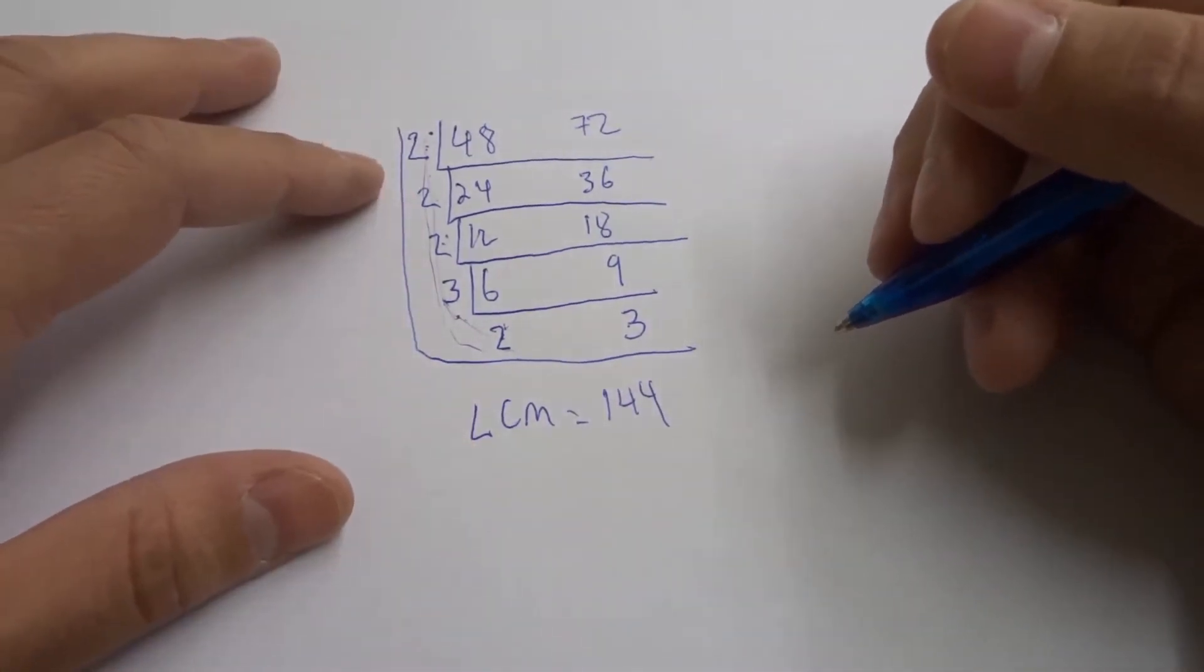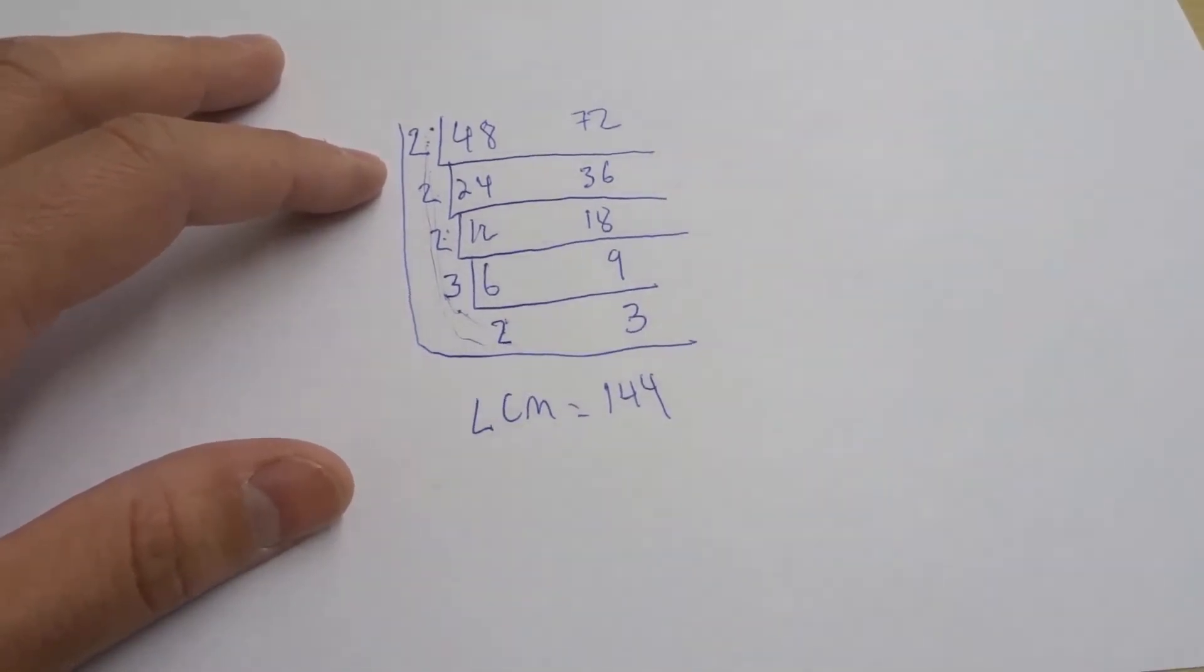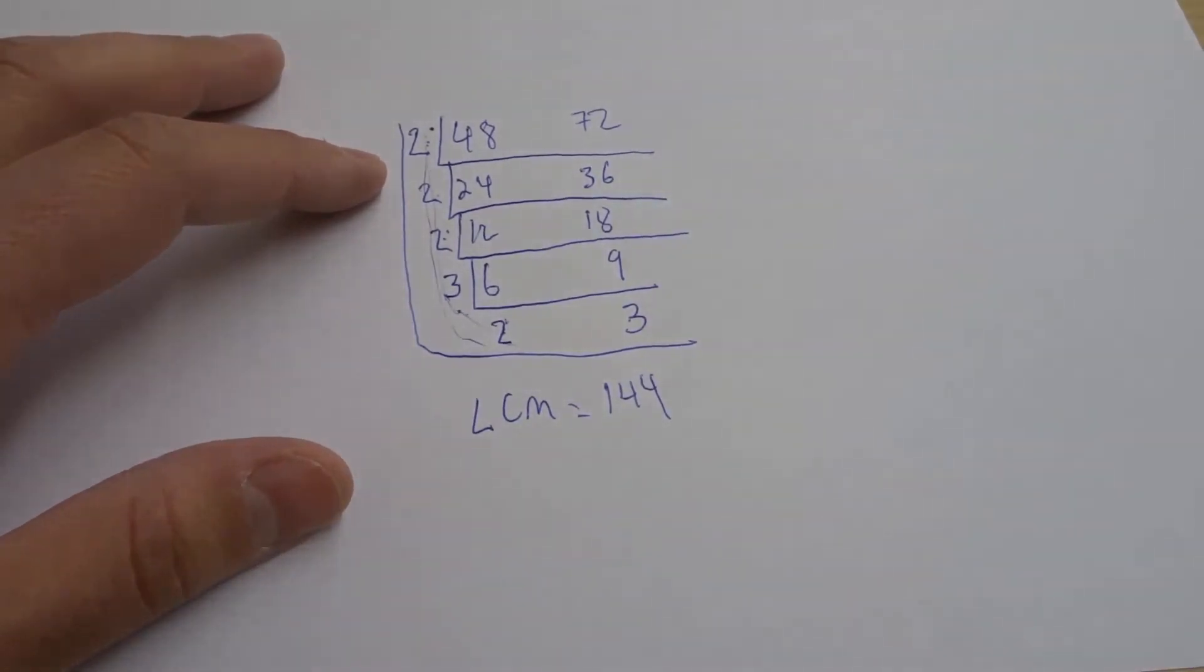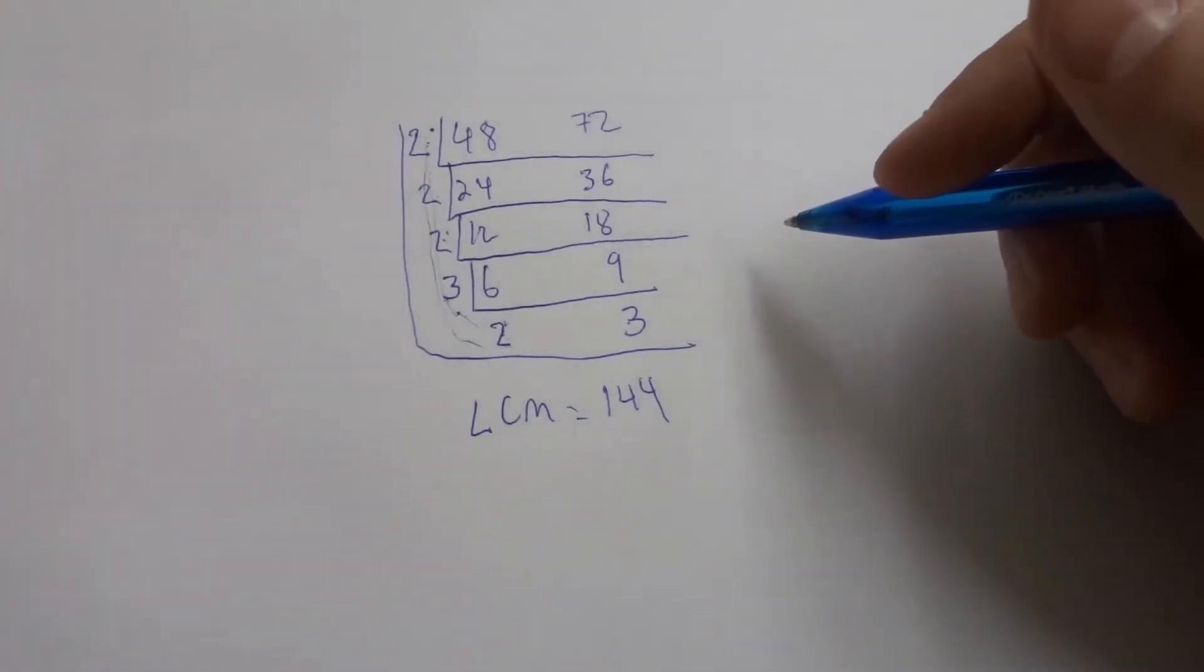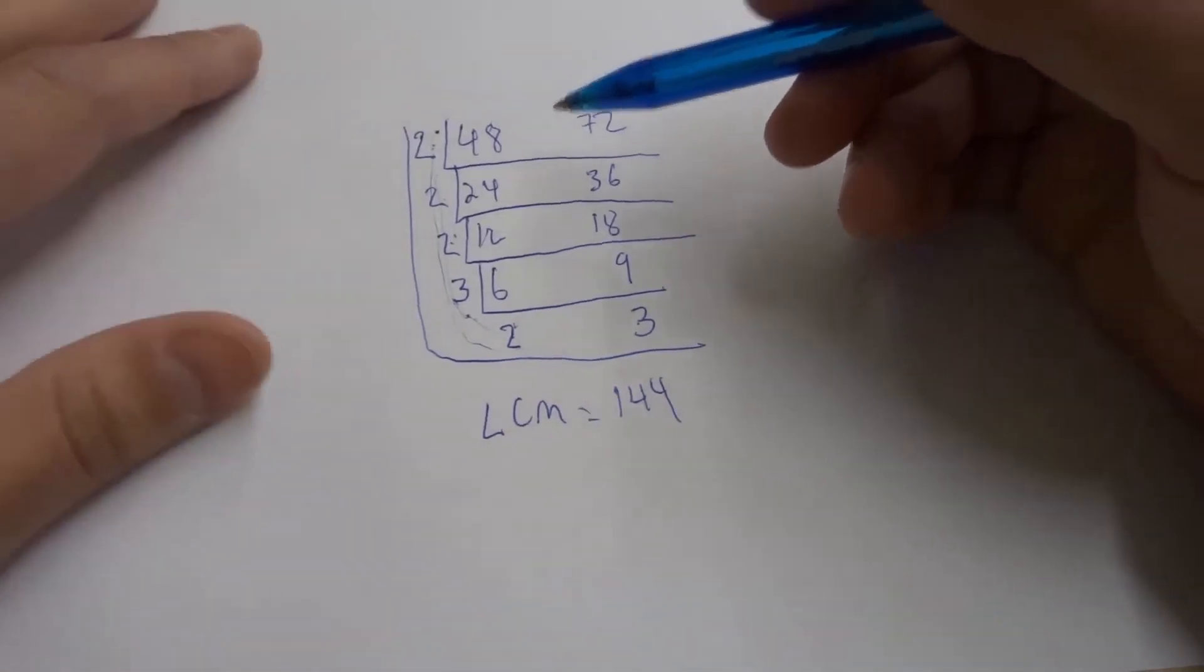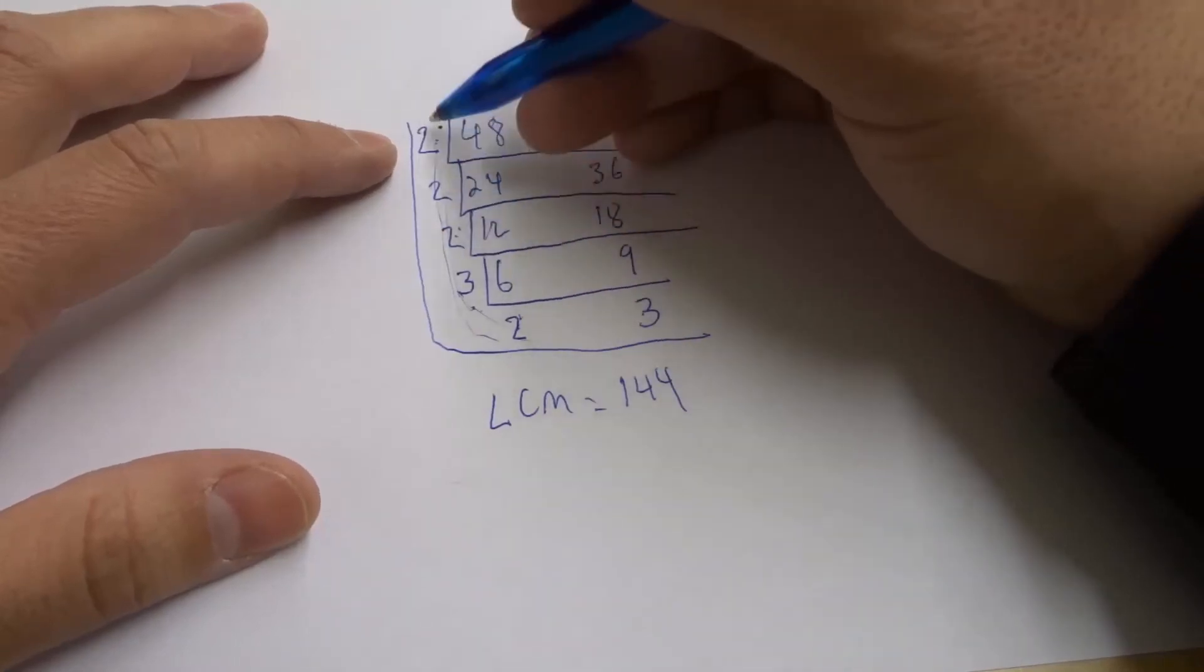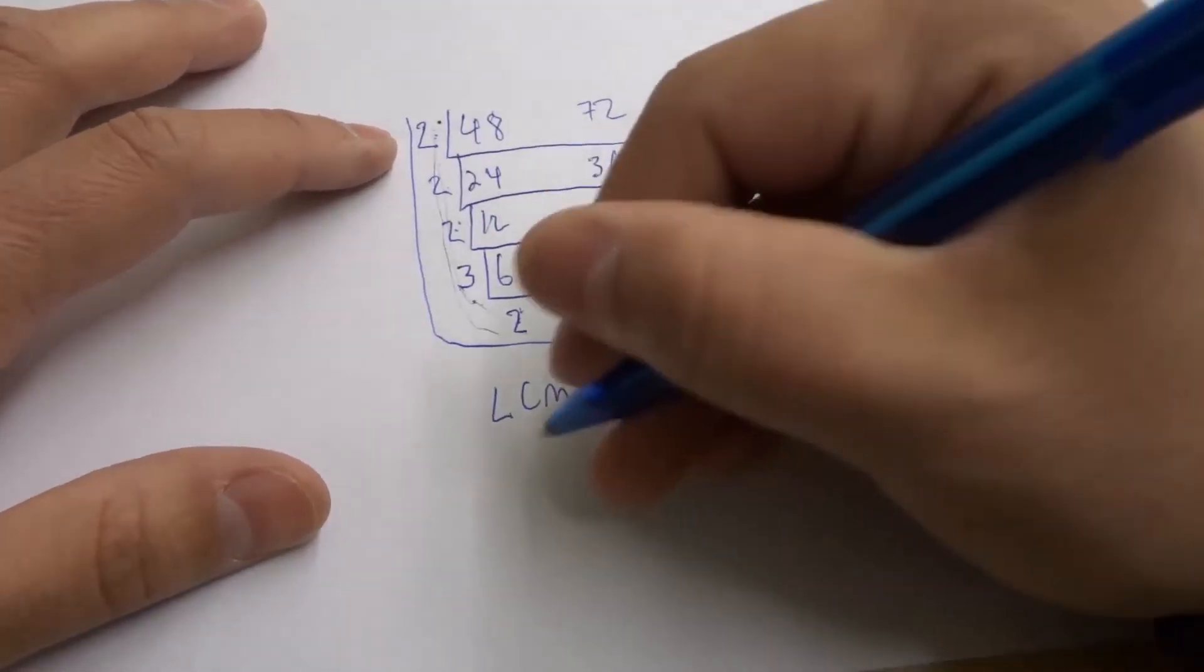To find our GCF, our greatest common factor, all that we are actually going to do is we're going to multiply all of the numbers together on the actual L. Just down the side of the L. That's the word I'm looking for. So just down over here, we're multiplying all of these together to find the GCF.